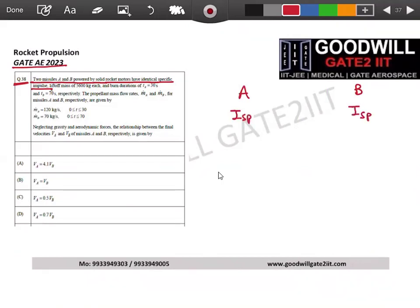Lift off mass of 5600 kg each. Lift off you know is initial mass right? So this is 5600 kg, here also initial mass is 5600 kg, and burn durations of 30 seconds and 70 seconds.